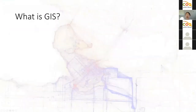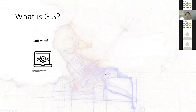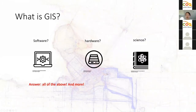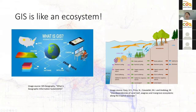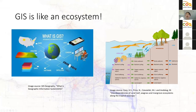Now let's try to define GIS. What is GIS? Is it software? Is it hardware? Is it science? The answer is it's all of the above and more. One way to think of GIS is as an ecosystem — like a seashore ecosystem with coral reef, seagrass, plants, water and land all comprising the ecosystem. Likewise for GIS, we have multiple elements: data, software, hardware, people, apps, maps, and analysis — together, all of those elements comprise GIS.